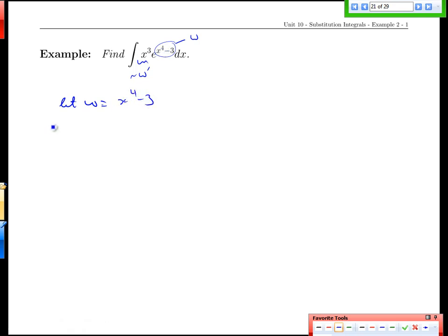So x to the 4 minus 3, as soon as we choose w, we immediately have a relationship between w and x in the derivative sense and that derivative would be 4x cubed. We take the dx up, 4x cubed down, and we get dw, 1 over 4x cubed dw equals dx. That's one of the relationships we're going to use along with the w equals x to the 4 minus 3.